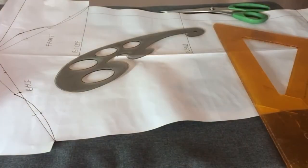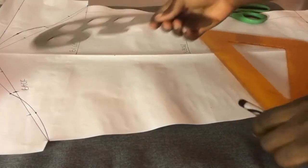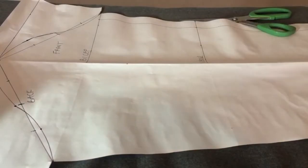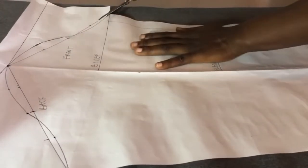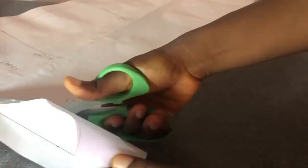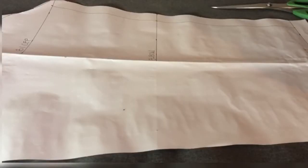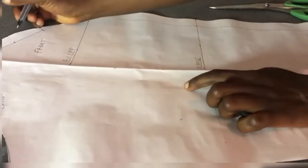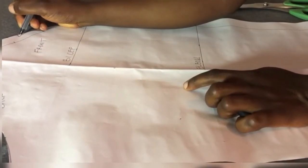All right, so that is what we have here. So I will cut this out. You'll give it a notch so that when you are cutting it on your fabric, you'll be able to differentiate which one is back, which one is the front. So I'll be putting one tick line here just to indicate that this is the back.